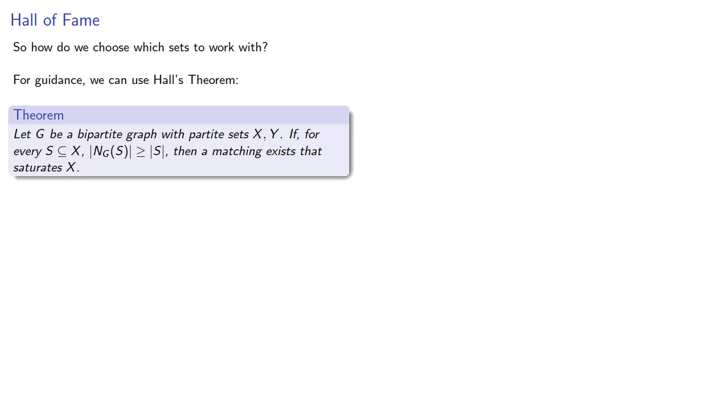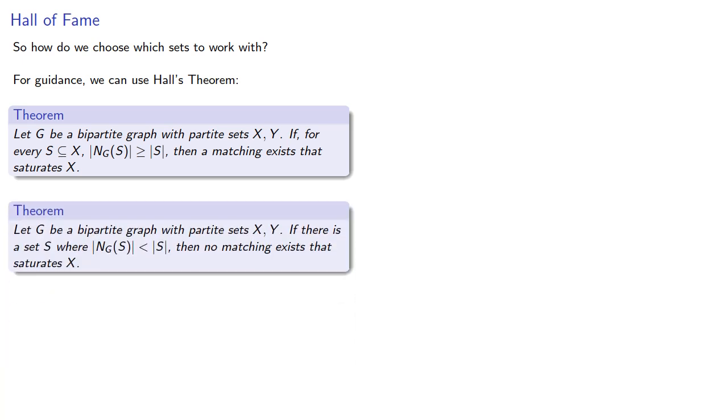Now, Hall's theorem is actually useful here in its contrapositive form. If we can find a set whose neighbor set is smaller, then no matching exists that saturates X.